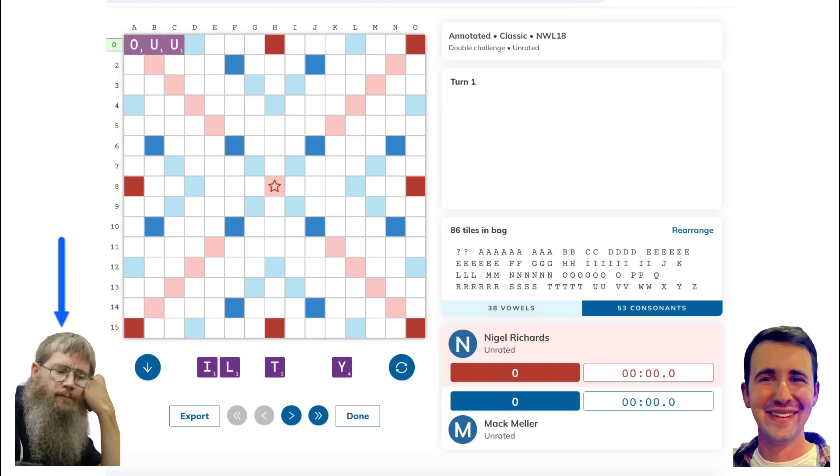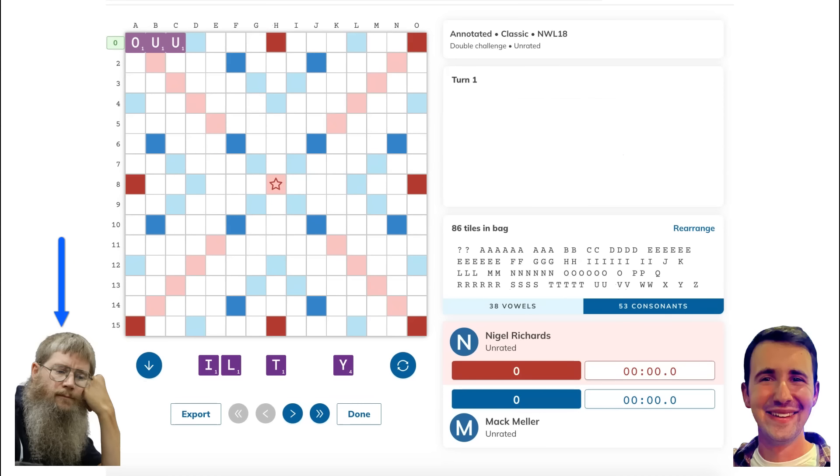Well, the thing is, he does have the Y, but the Y actually goes really well with the other tiles he's keeping. Lots of words end in I-L-Y or I-T-Y, both of which he has on his rack. Also, one benefit of this trade is that if Nigel were to bingo, the fact that he has the Y, which is a four point tile, would mean his bingo would probably score more than if he were to keep just one point tiles with another exchange. So definitely a counterintuitive exchange to come up with, but it does kind of make sense the more you think about it.